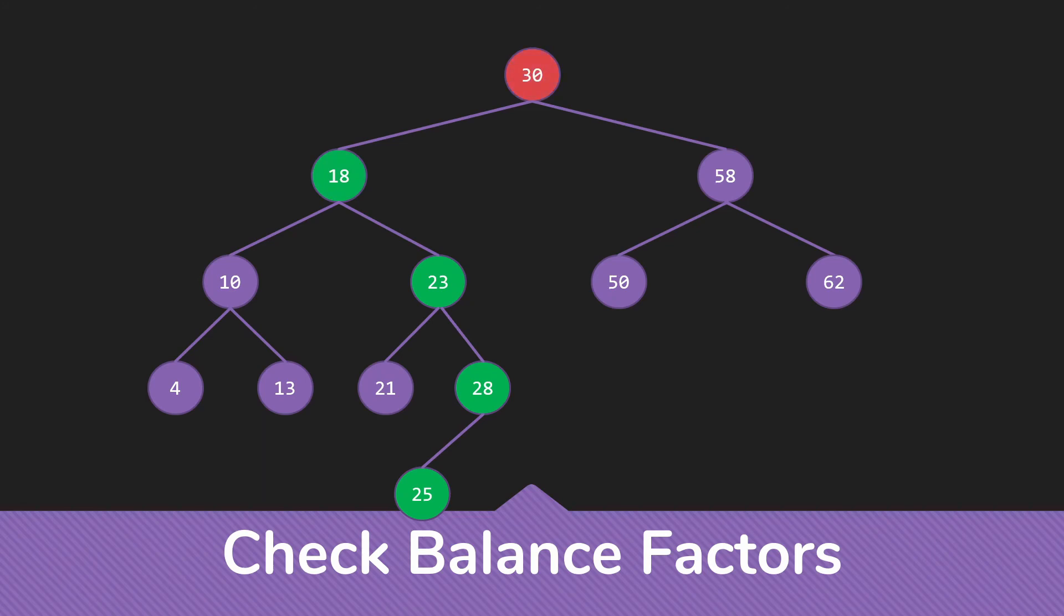Now this time we see the 18 is the left child of 30. But the 23 is the right child of 18. Since those are coming from two different directions, we need a double rotation to fix the tree.